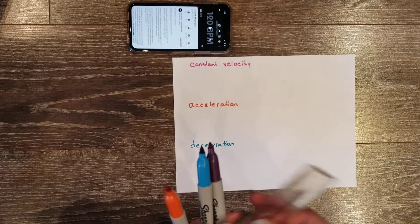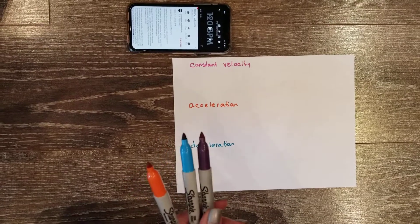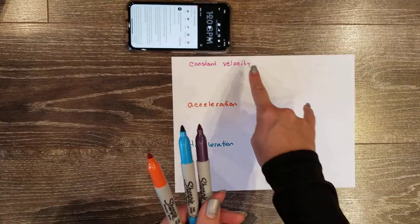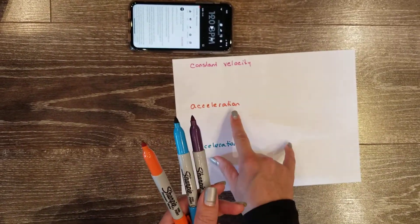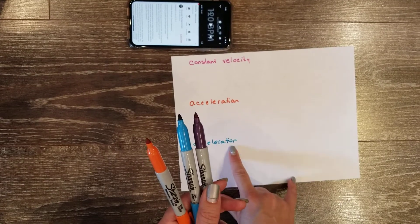We're going to start with drawing ticker tape timing for constant velocity, acceleration, and then deceleration.